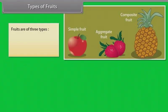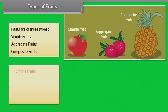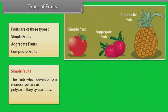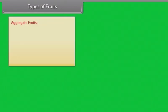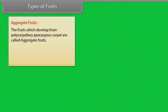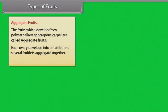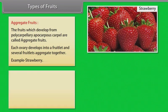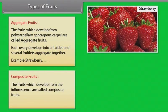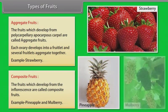Fruits are of three types: simple fruits, aggregate fruits, and composite fruits. Simple fruits are those which develop from monocarpellary or polycarpellary syncarpous ovaries. Aggregate fruits develop from polycarpellary apocarpous carpels; each ovary develops into a fruitlet and several fruitlets aggregate together — example: strawberry. Composite fruits develop from the inflorescence — example: pineapple and mulberry.